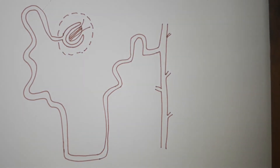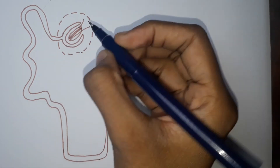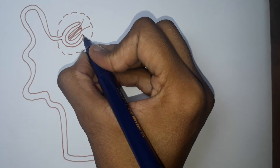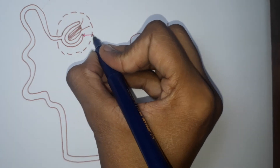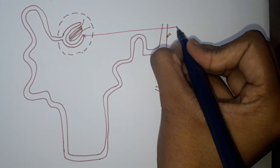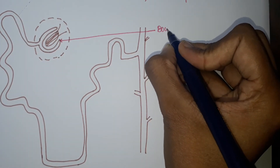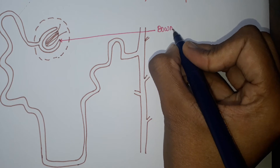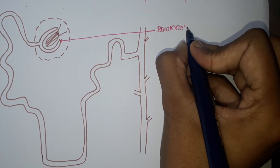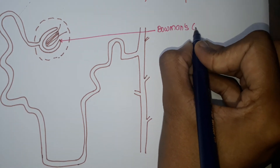This is the structure of nephron. Now let's label this diagram. Starting from here — this is, I think you all know — Bowman's capsule.